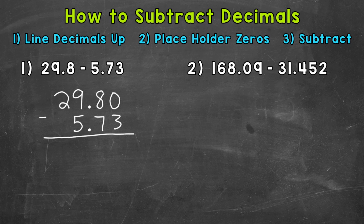So we start with 0 minus 3, so we're going to need to borrow. Let's borrow from this 8. And now we have 10 minus 3, which is 7. Then we move to the tenths where we have 7 minus 7, which is 0. Now bring our decimal straight down. The decimal should be lined up throughout the entire problem, even in the answer.